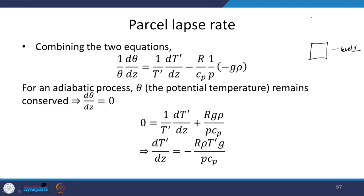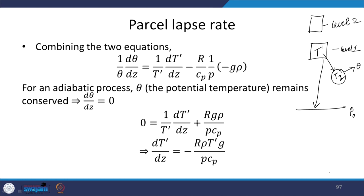If you raise a parcel from level 1 to level 2, the reference pressure at the surface is P naught. According to the definition of potential temperature, if the temperature inside is T prime and you bring the air parcel's pressure to P naught, whatever T prime becomes — call it T1 or T2 — that is the potential temperature. Even if you bring the parcel from level 2, where the temperature is T1 prime, back to surface pressure P naught, the temperature will also be theta, meaning as long as there is no heat input or output the potential temperature remains constant — that is the basic idea.